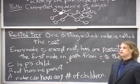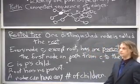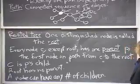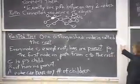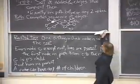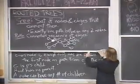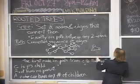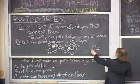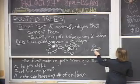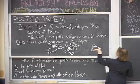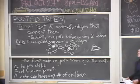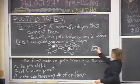For a tree to be a tree at all, you cannot have any circular paths. As soon as you have a circle, you have two different paths between any pair of nodes — you could go this way or you could go that way — and that's illegal in a tree. So a tree doesn't have any cycles or loops at all.